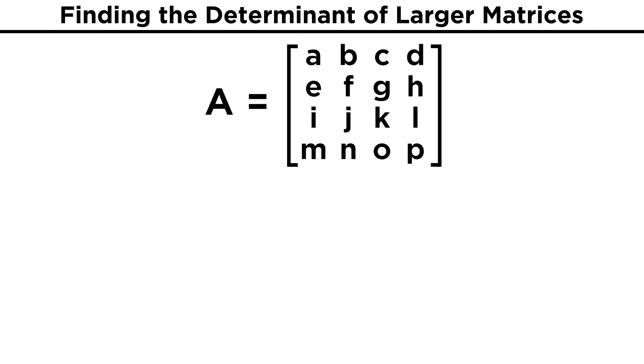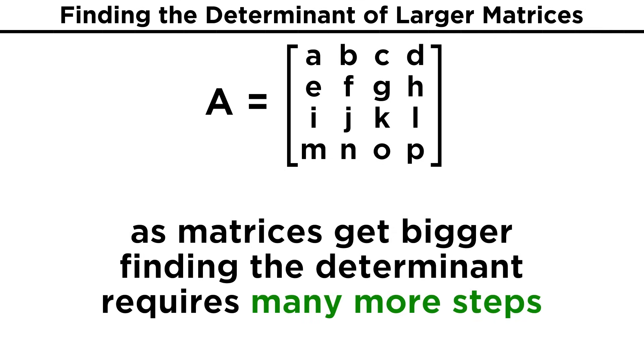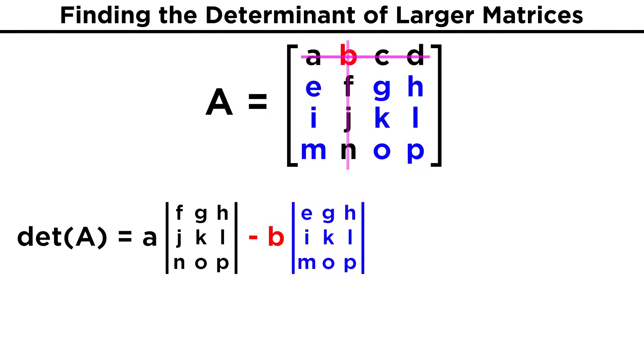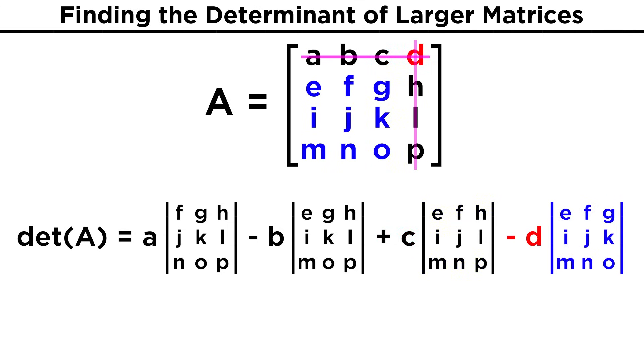Now, how would we find the determinant of larger matrices still? As the matrices get bigger, the algorithm doesn't really get any harder, we just end up adding many more steps very quickly. For a four by four matrix, we will take the first entry and multiply by the determinant of this three by three matrix, minus this second entry times the determinant of this three by three matrix, plus this third entry times the determinant of this three by three matrix, minus this fourth entry times the determinant of this three by three matrix.